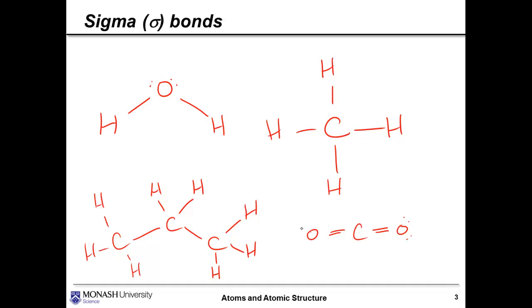But what about a molecule, for example, like carbon dioxide? I've drawn it here, and it has some lone pairs and it has some double bonds. When it comes to these two bonds in this position, are they both sigma bonds, or is there something else going on?